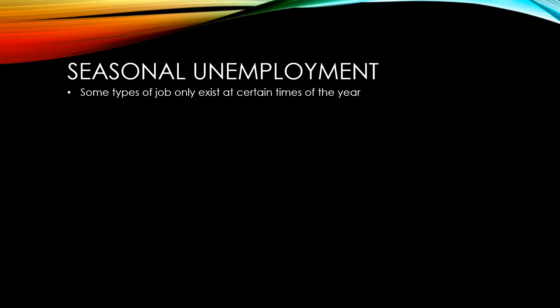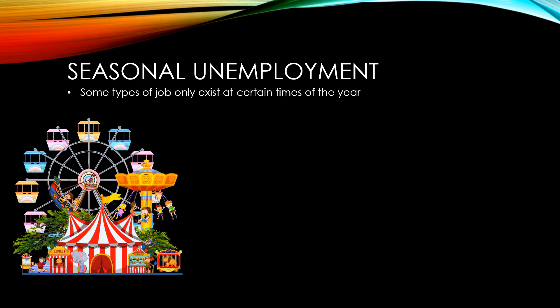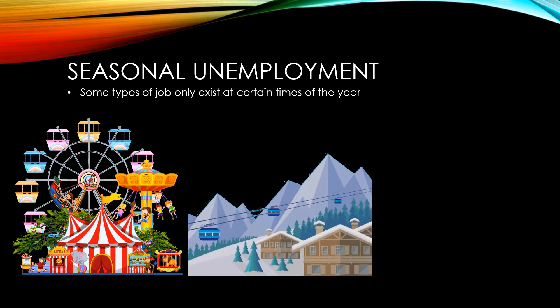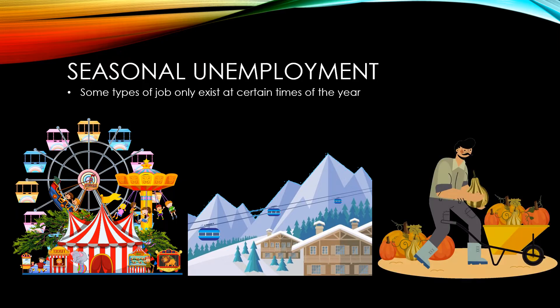Seasonal unemployment refers to the unemployment that occurs because certain jobs only exist at certain times of the year. In the UK, theme parks shut through the winter months. A ski resort would only be able to make money during the winter months. When it comes to fruit and vegetables, there are certain times of the year when they need to be harvested and these are the times when more workers are required. Places like Devon and Cornwall that see a huge influx of visitors through the spring and summer months will experience a lot more seasonal unemployment in the colder months.